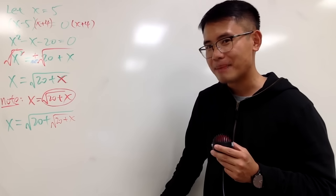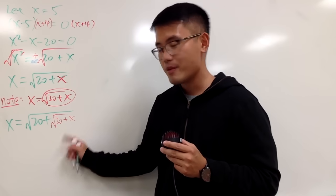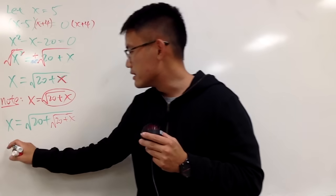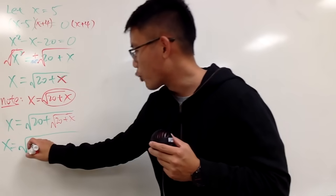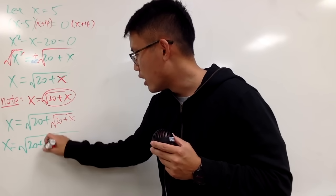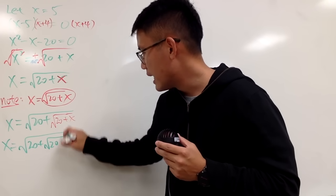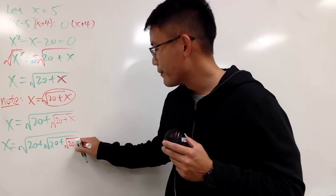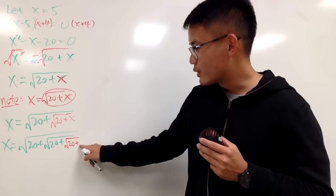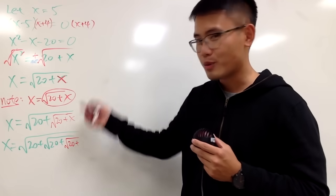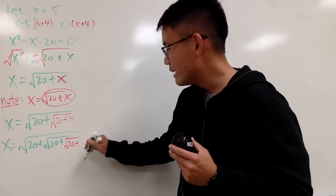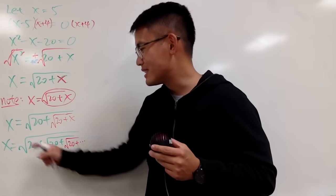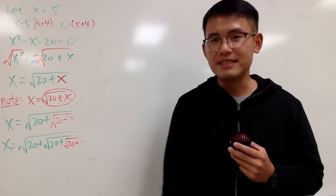We don't have to stop there. Because we see x appearing again, we can keep substituting. So this becomes x equals the square root of 20 plus the square root of 20 plus the square root of 20 plus dot dot dot. We have infinitely many square roots nested inside each other. This is why it's called the infinite nested square root.